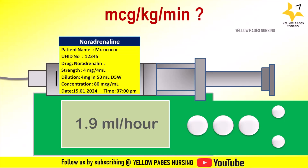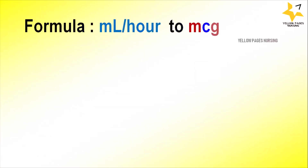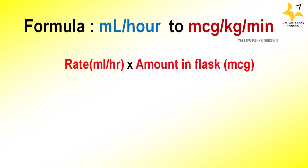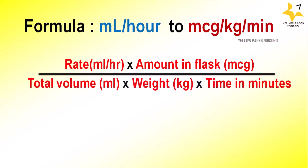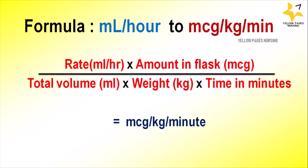Please listen carefully so that you can do the example at the end of the slide. The formula to convert ml per hour to mcg per kg per minute is: rate (ml/hr) × amount in flask (mcg) ÷ total volume (ml) ÷ weight (kg) ÷ time (minutes), which gives mcg per kg per minute.